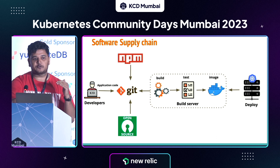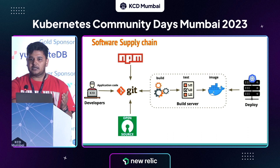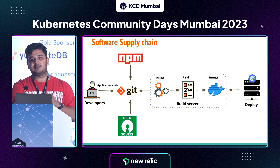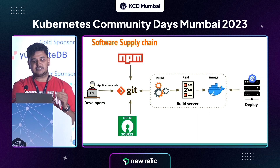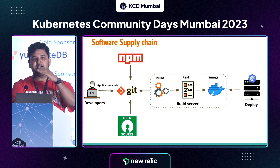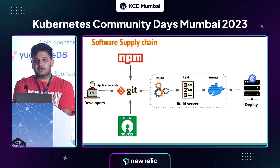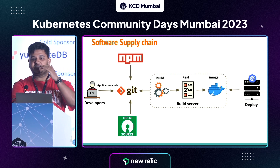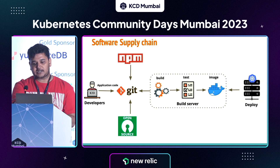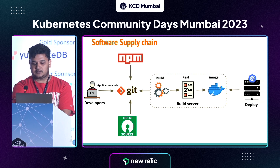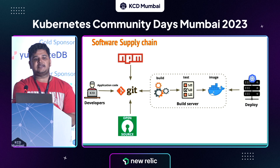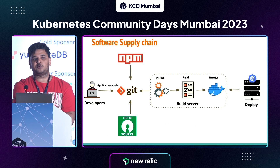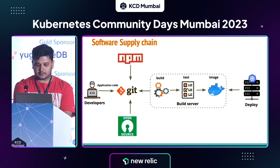The actual steps in the software supply chain can vary depending on the organization and the nature of the application. But at a very high level, the three major phases are: the code level, the build level, and the deploy level. For securing our supply chain, we can try to secure these three major phases. We will now look at each of these phases separately to see what challenges we face and what potential solutions we can make.